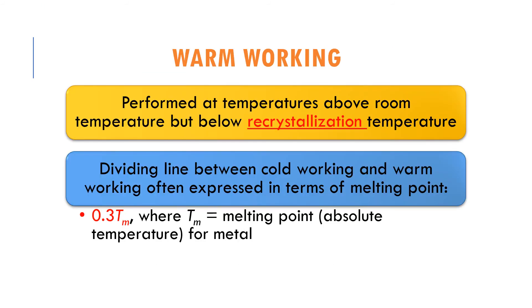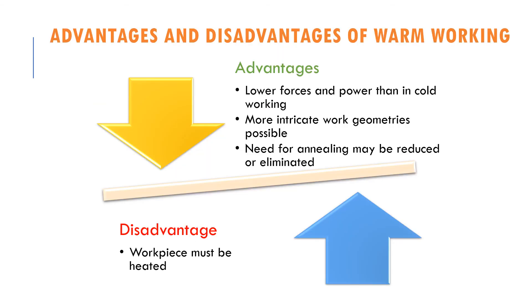Warm working is performed at temperatures above room temperature but below the recrystallization temperature of the work material. The dividing line between cold and warm working is expressed in terms of melting point as 0.3 times Tm. When temperature exceeds 0.3 Tm, it is considered warm working. The advantages include lower forces and power compared to cold working, more intricate work geometries, and reduced or eliminated need for annealing. The disadvantage is that the workpiece must be heated, adding to cost.